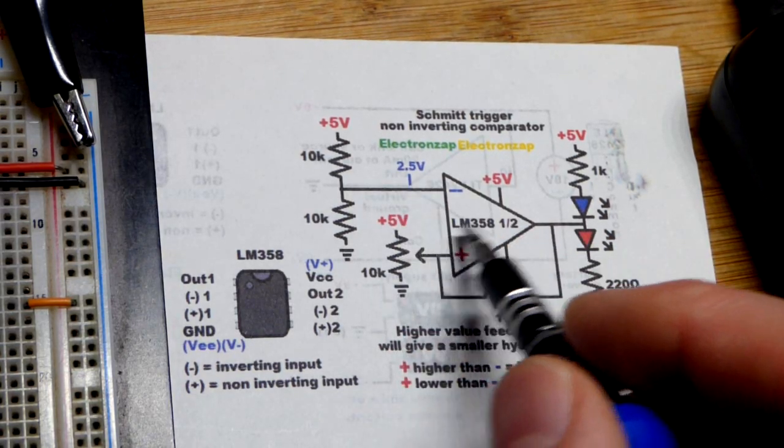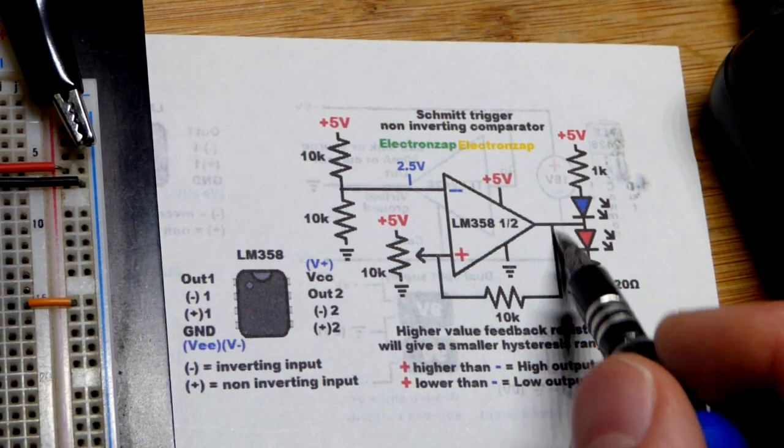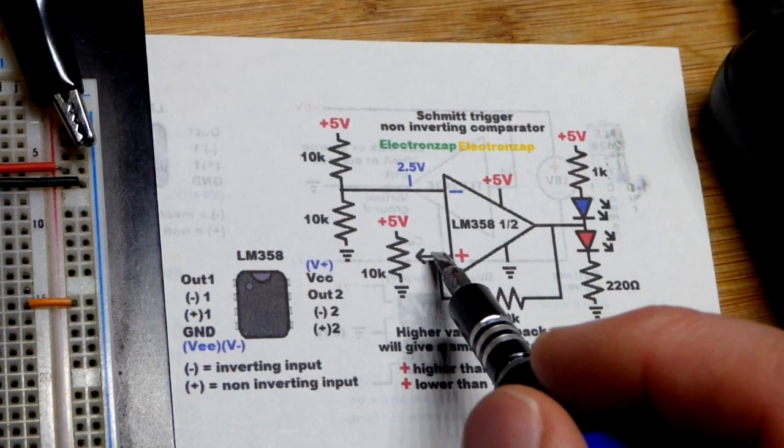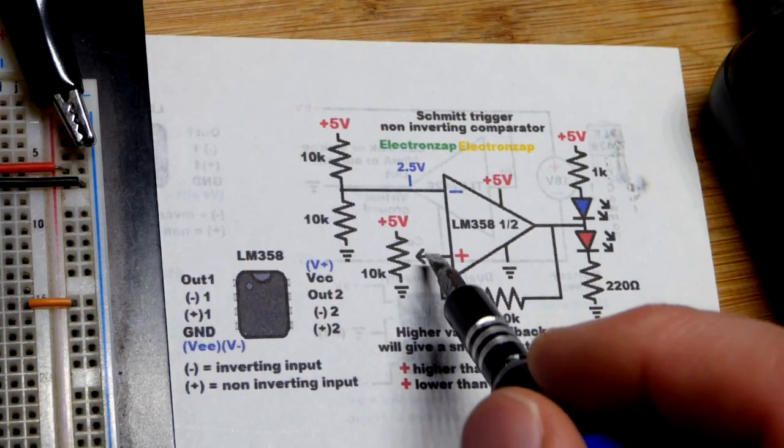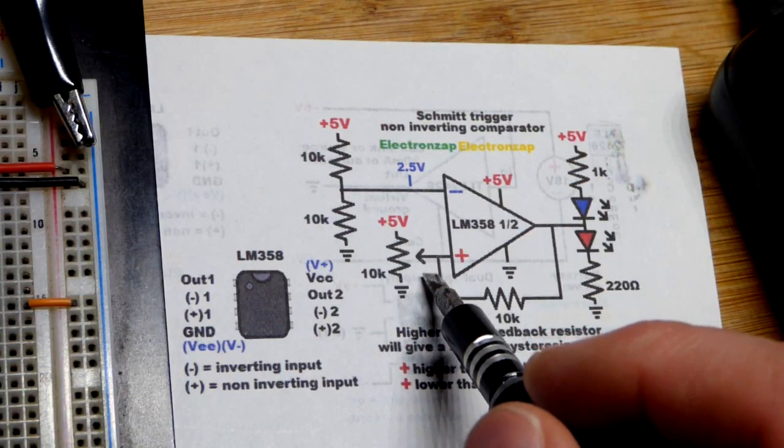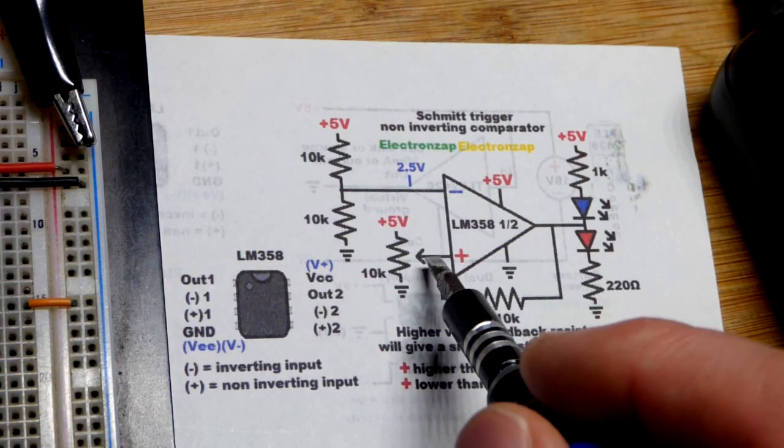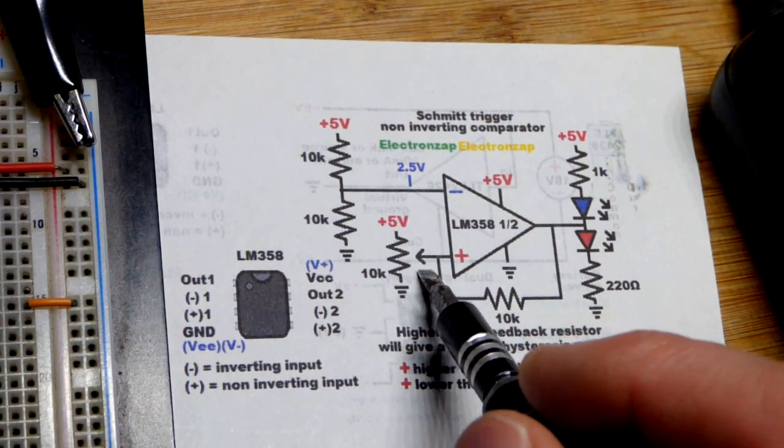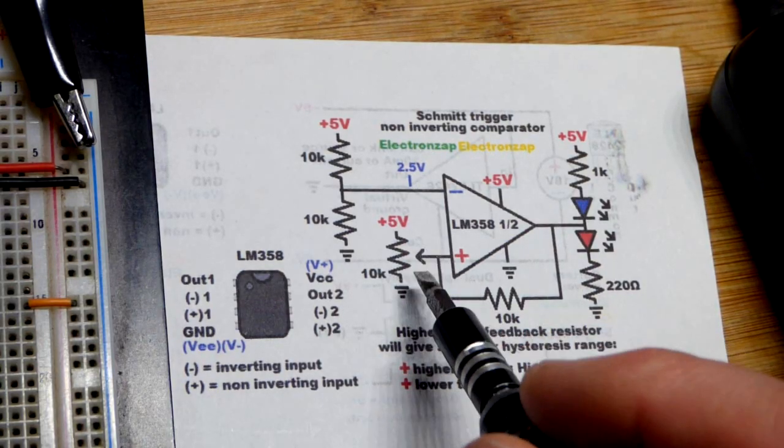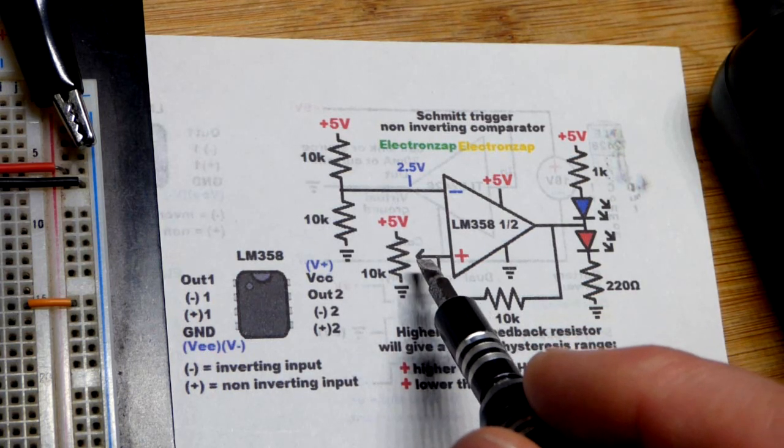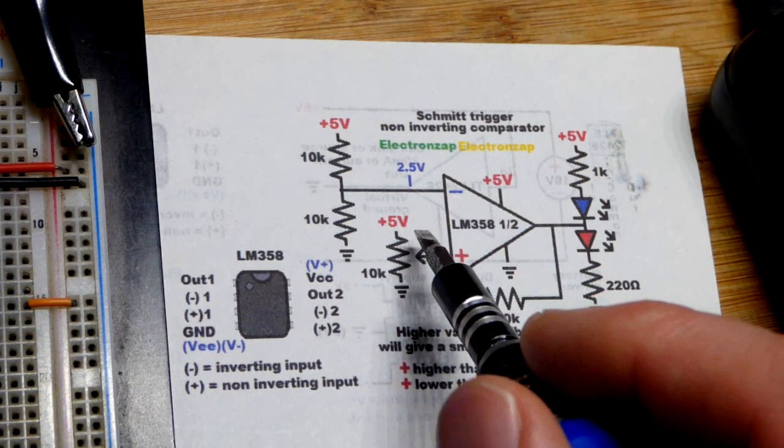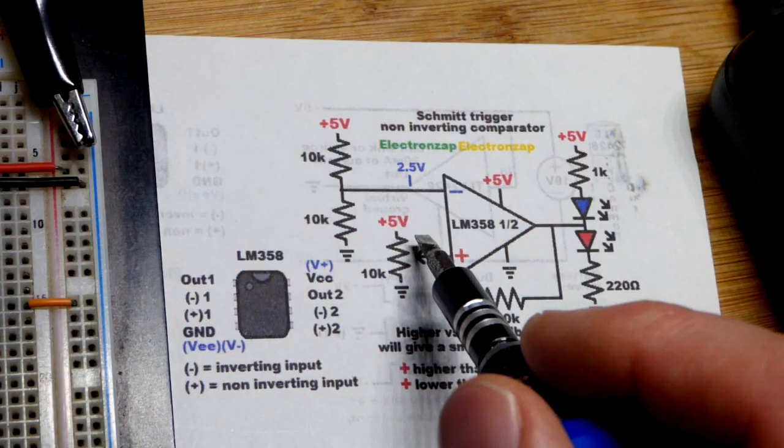So if we go above 2.5 volts, then the output goes high and that raises that voltage a little bit more. And then if we lower this below 2.5 volts, the output goes low right there and it pulls that voltage down even further. So we have a middle ground region called hysteresis.